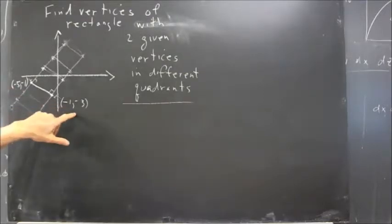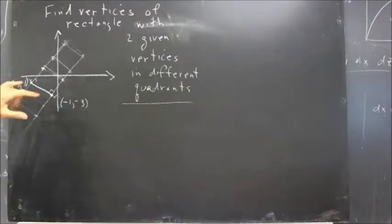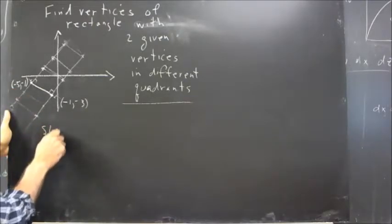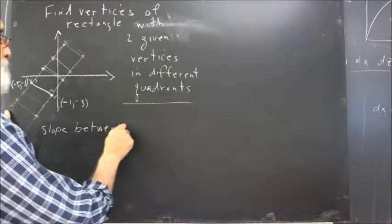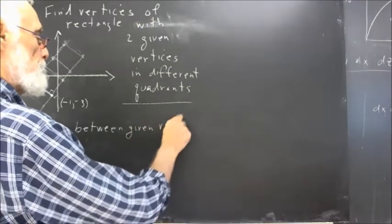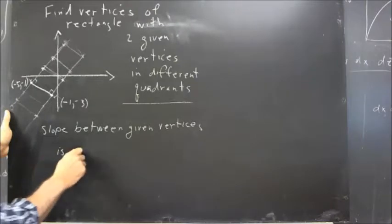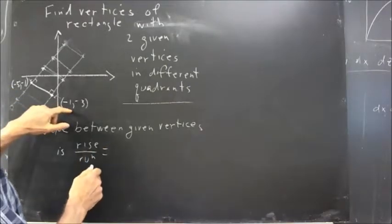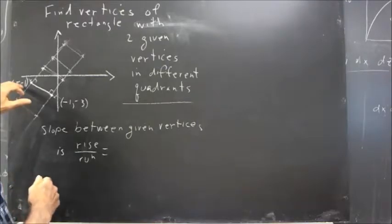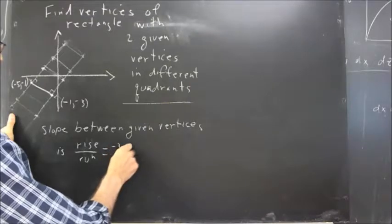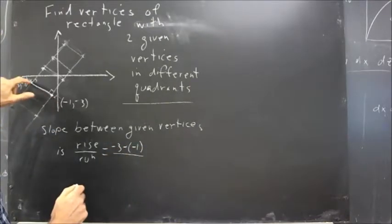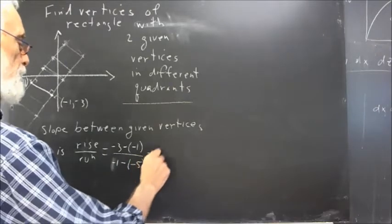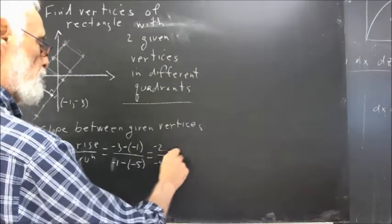We see first that it's possible to construct a rectangle with two given vertices in different quadrants. Now let's see what we do if we know the coordinates of the two given vertices. Let's say this vertex is at negative five, negative one, and this one at negative one, negative three. First we get the slope. The slope between the given vertices: rise over run equals negative three minus negative one over negative one minus negative five, which equals negative two over four, or negative one half.